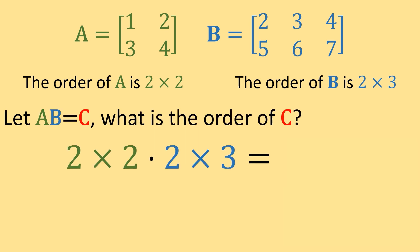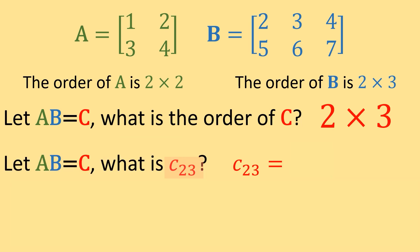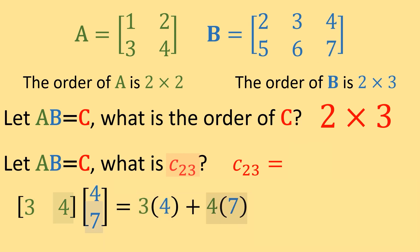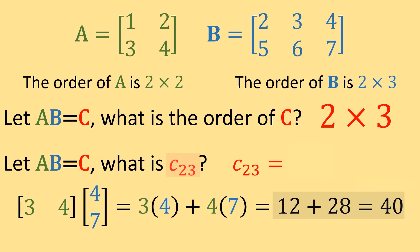If matrix A times matrix B equals matrix C, what is the order of C? The order comes from the outside numbers: 2 by 3, so C has two rows and three columns. Knowing C is 2 by 3, can we find the value in position 2, 3? Yes — we use row 2 from matrix A and column 3 from matrix B: row 3, 4 times column 4, 7, which equals 3 times 4 plus 4 times 7, giving 12 plus 28, which equals 40. So C(2,3) equals 40.